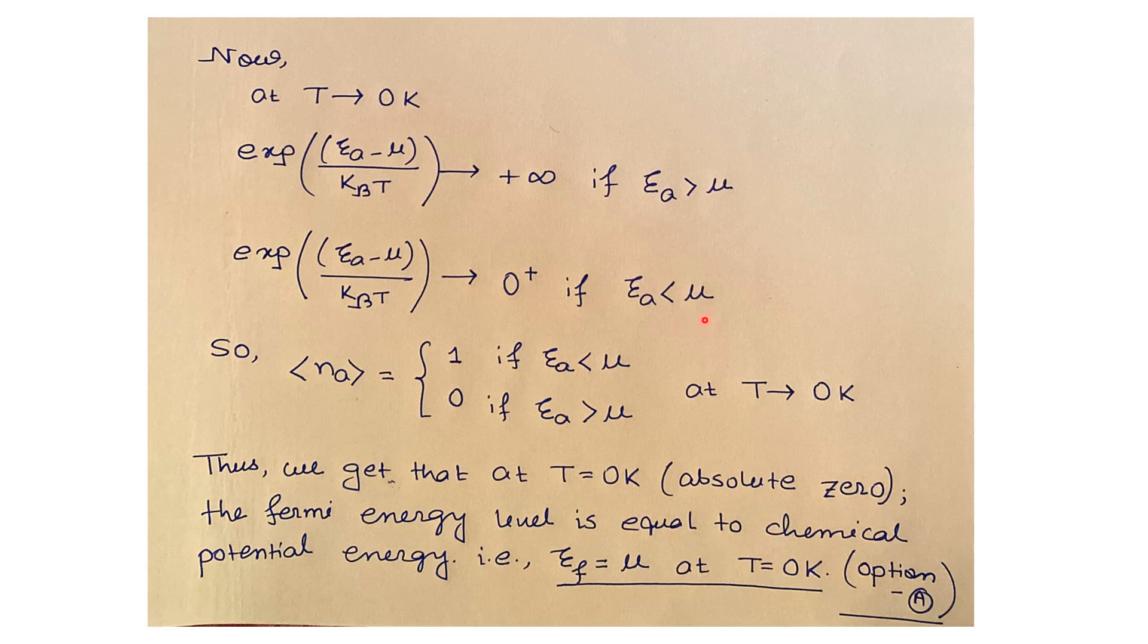So the average number of particles, that is the occupation number, will be one if Ea is less than μ, and it will be zero if Ea is greater than μ when the temperature is very close to zero Kelvin.